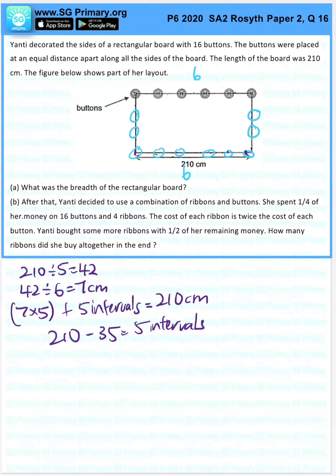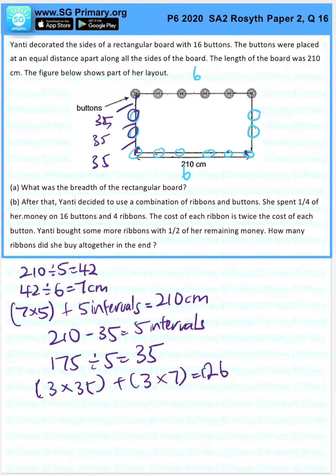1 interval is 175 divided by 5, which is 35. So 1 interval is 35. We know that the diameter is 7, so here we have 1, 2, and half, 3. So 3 times 35 plus 3 times 7 will give me 126 centimeters as my answer for A.